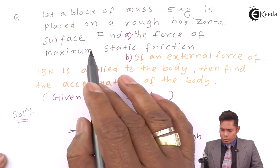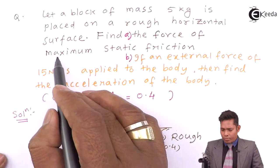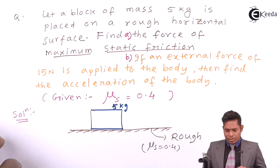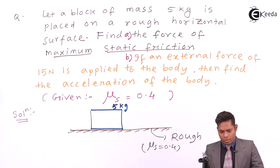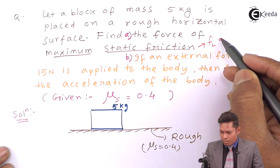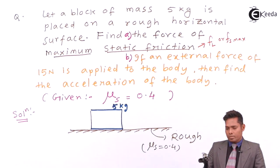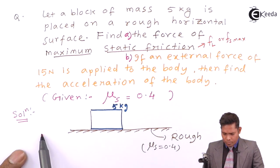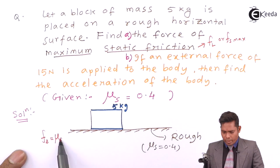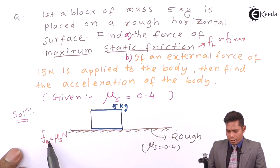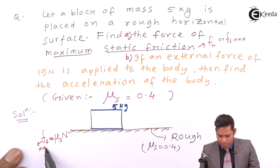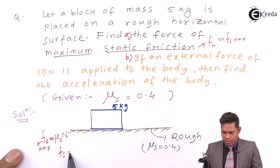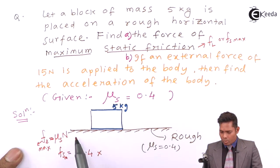First, we find the force of maximum static friction, also called limiting friction — FL or Fs maximum. From the law of static friction: Fs = mu s × N. Writing the equality means we are at maximum. So Fs maximum = 0.4 × N.